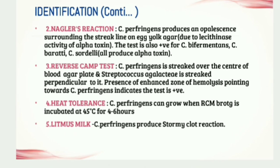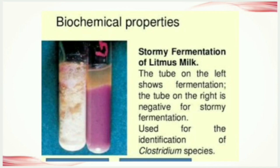The fourth identification method is the heat tolerance test. Clostridium perfringens can grow when RCM broth is incubated at 45 degrees Celsius for four to six hours, which differentiates it from other organisms. The fifth is litmus milk: Clostridium perfringens produces a stormy clot reaction due to fermentation of lactose, producing acid as well as vigorous gas.